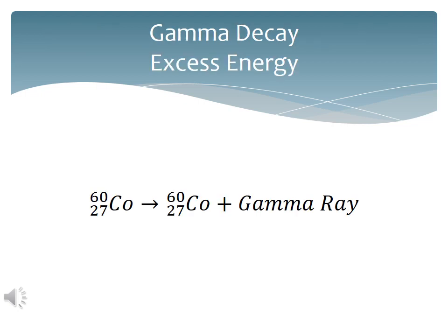In gamma decay, the atomic number and the mass number do not change. You're simply getting rid of some excess energy left over from a previous decay event.